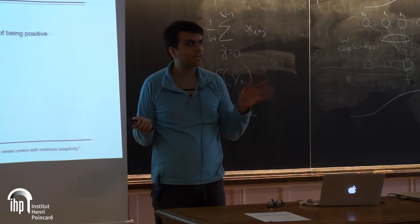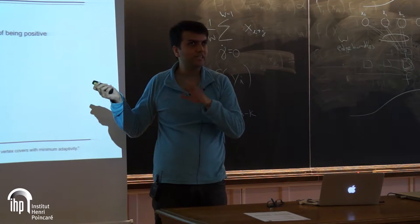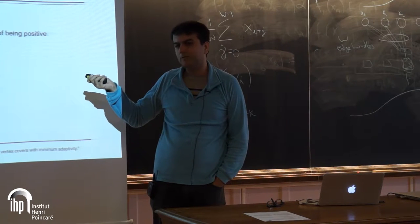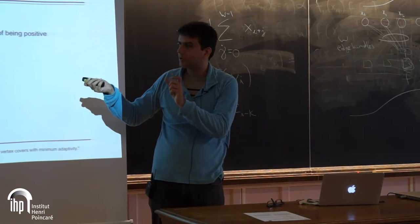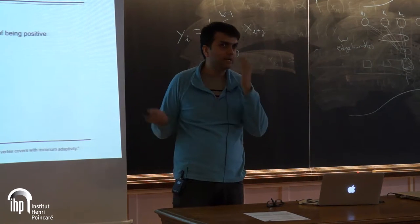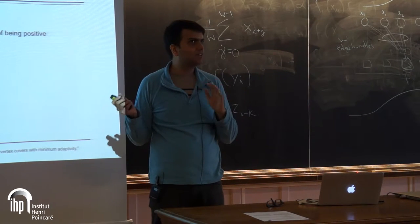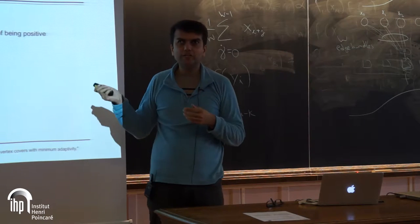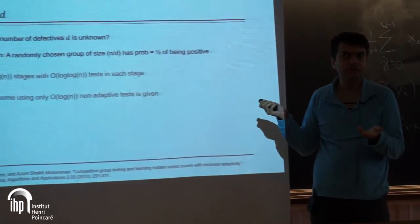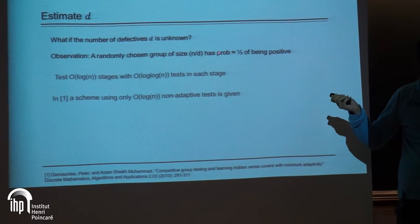The intuition is: if you choose a group of size roughly n over d, then a simple probabilistic argument shows that 1 minus d/n to the power n/d is roughly 1/e. So a group of size n/d has constant probability — something like half — of containing a defective. If you choose n over d times ln 2, you get a probability of half of the test being positive. You want the test to be positive or negative with roughly equal probability, because if the probability of a positive outcome is very high or very low, the test isn't telling you much. You want to get as much entropy as possible out of the test.